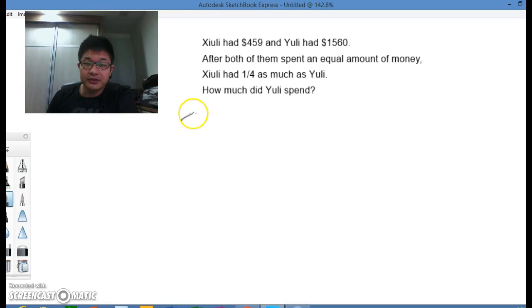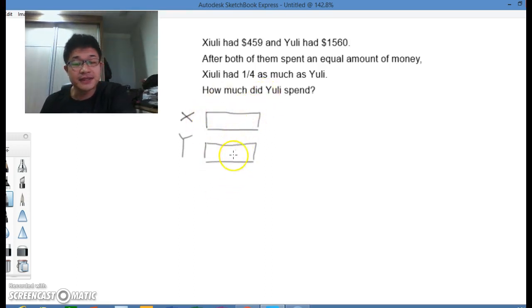They both spent an equal amount of money. So, to cut things short, X and Y. X for Xuli, Y for Yuli. They both spent an equal amount of money. So I can just draw a box. But of course, these two boxes need to be of the same size to represent the spending, the money that is spent. Alright, being the same.